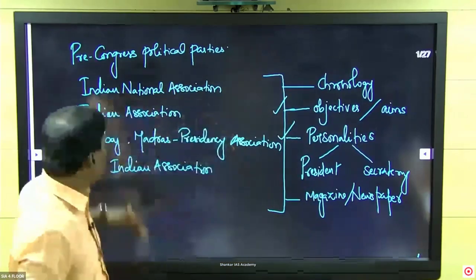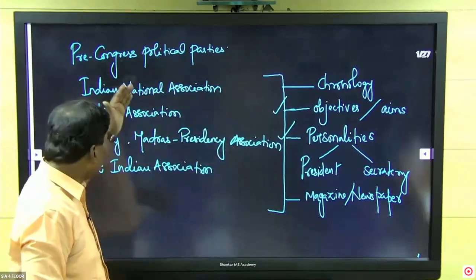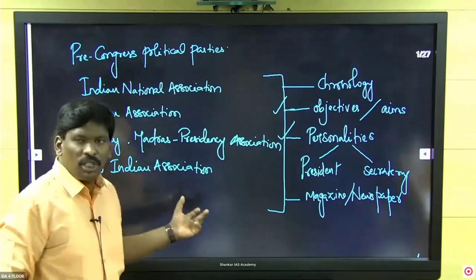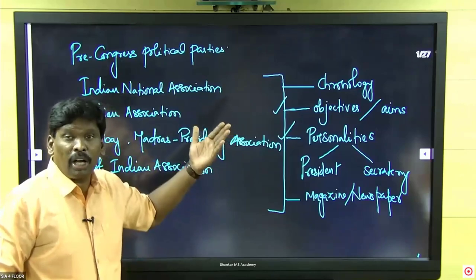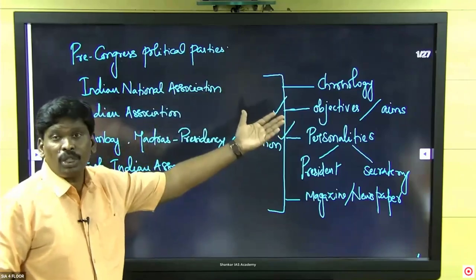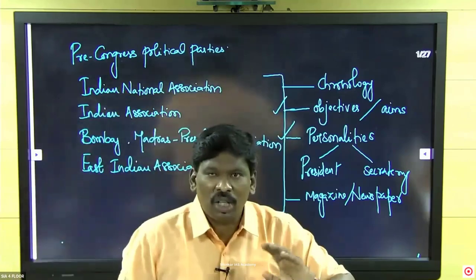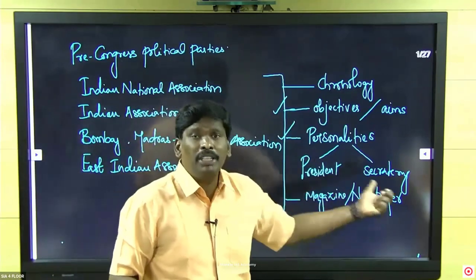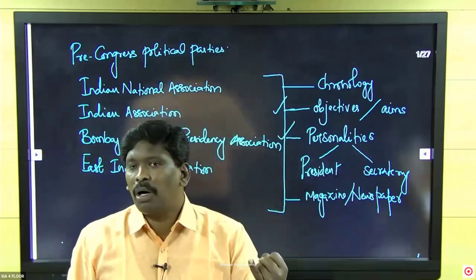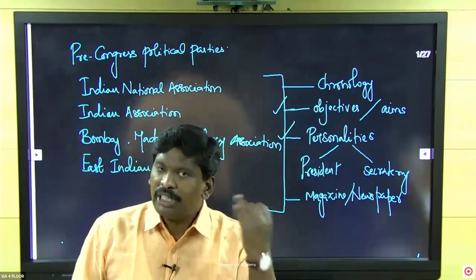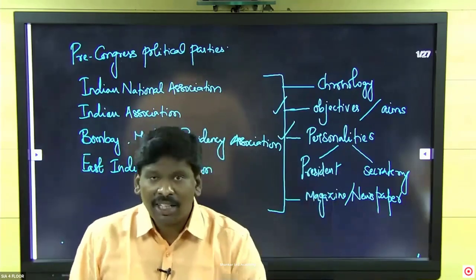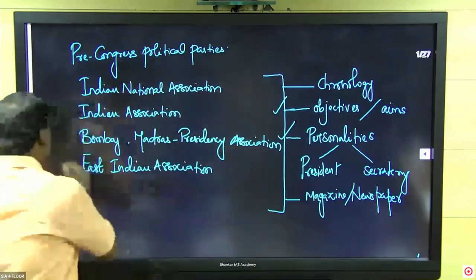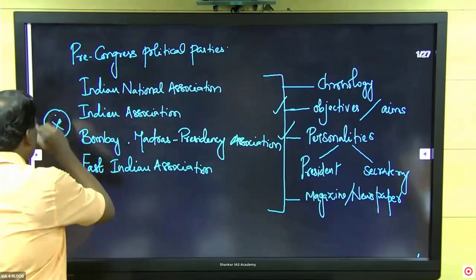Pre-Congress political parties include the Indian Association, Bombay and Madras Presidency Associations, East Indian Association, Zamindari Association, Calcutta Association, and others. Very popular questions are about the personalities associated with the Bombay Presidency Association, the three Moderates, and personalities associated with the Madras Presidency Association. These are repeated question areas.